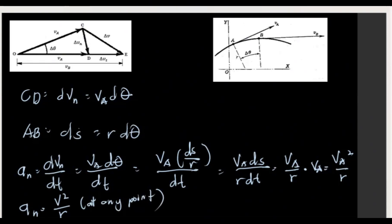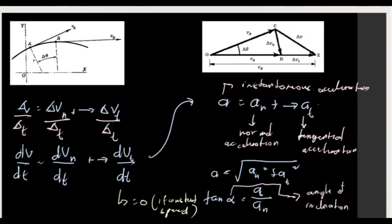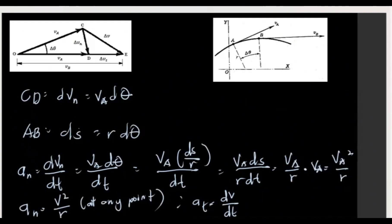So normal acceleration A sub N equals v squared over R, and tangential acceleration A sub T equals dV over dt. The tangential component represents the rate of change of speed magnitude. The second illustration shows the relationship when the acceleration forms a rectangle with both A sub x, A sub y components and the normal/tangential components.